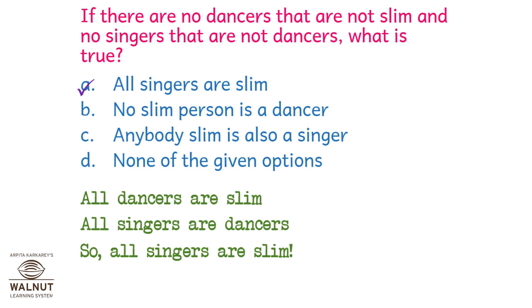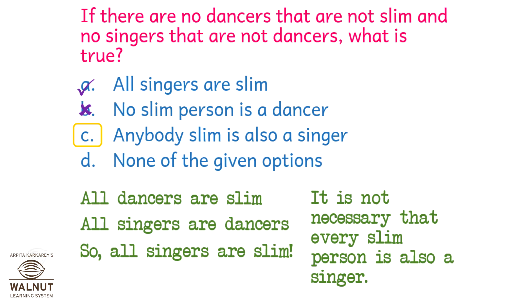But are the other options wrong? Option B: No slim person is a dancer. But it's given that all dancers are slim, so option B is not right. Option C: Anybody slim is also a singer. It is not necessary that every slim person is also a singer, so that is wrong too. Option D: None of the given options — but we've already found the correct answer, which is A.